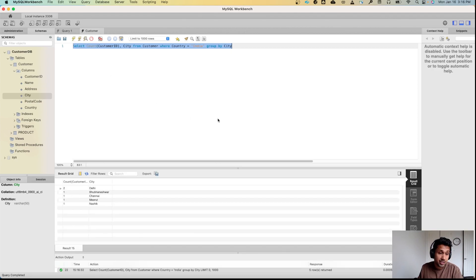When I run this command, I get this information which tells us that there are two customers who live in Delhi and one customer in Bhubaneshwar, Chennai, Meerut, and Nasik. If the business comes to me and says, can you give me only the cities where the number of customers are greater than one?